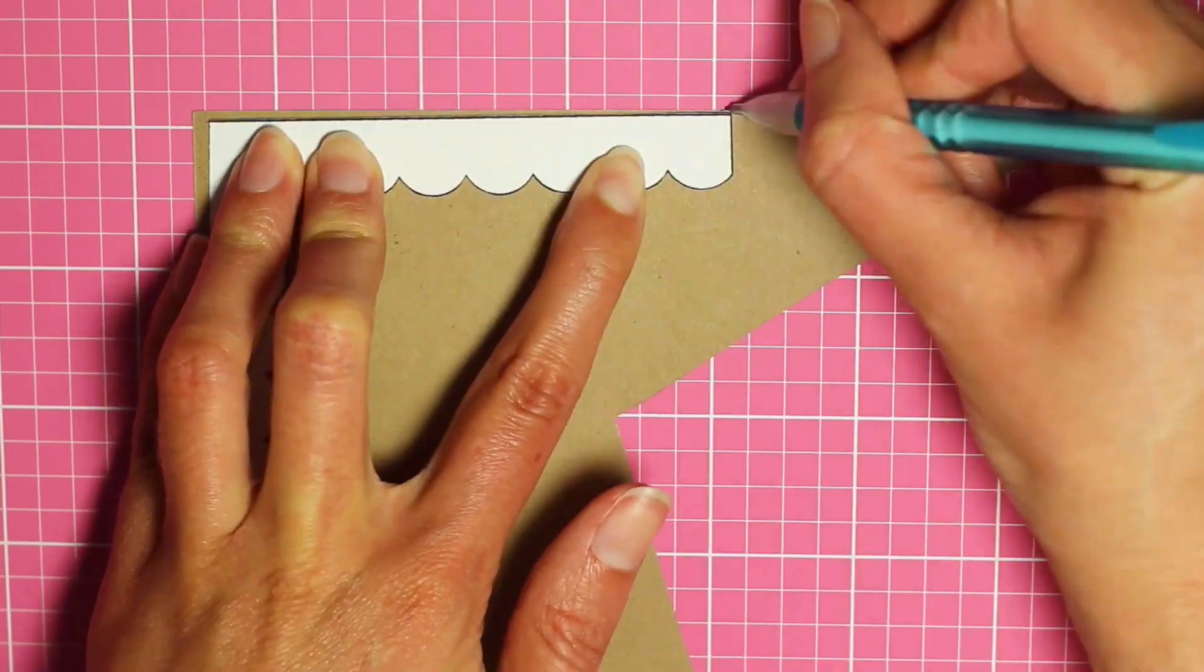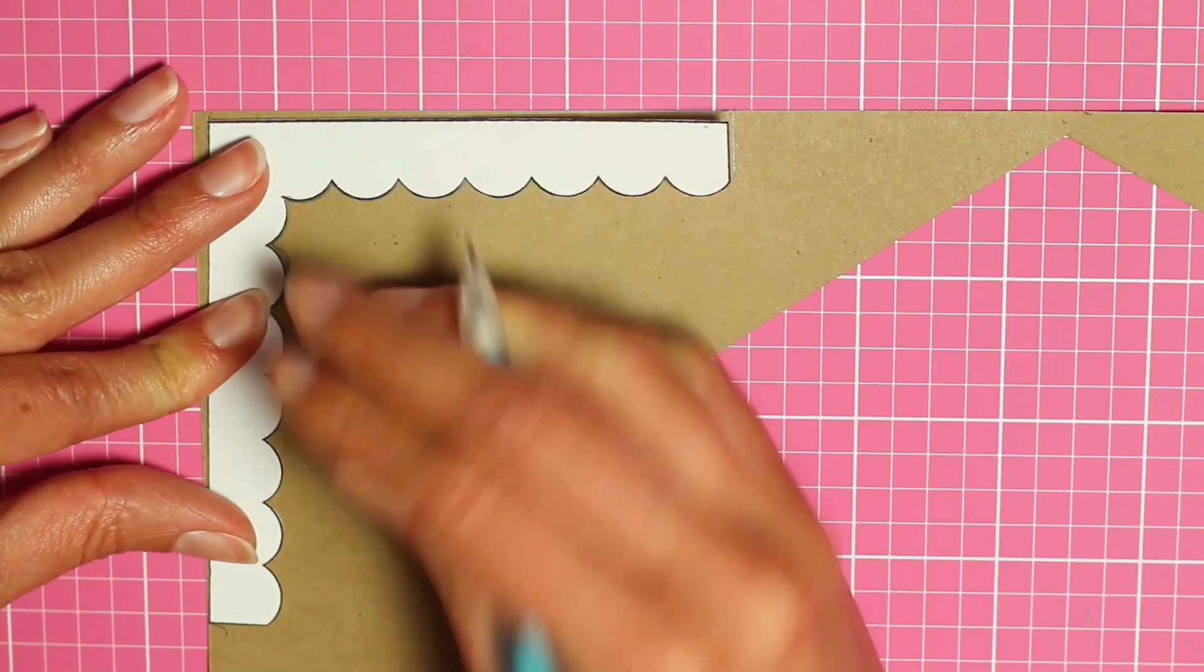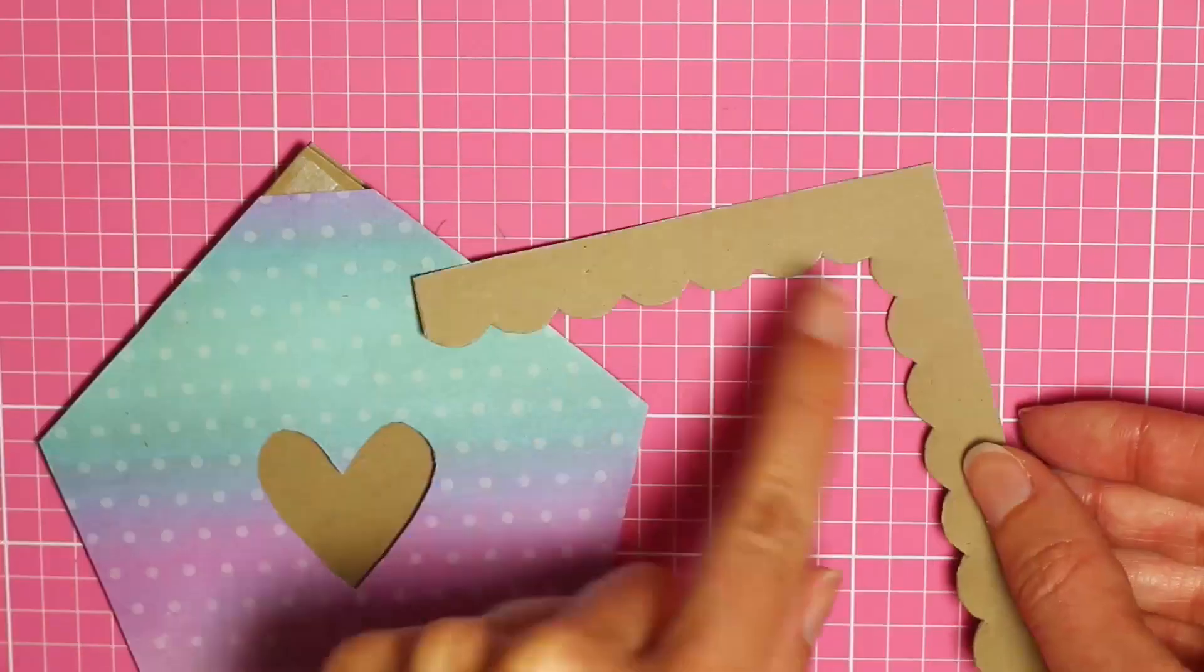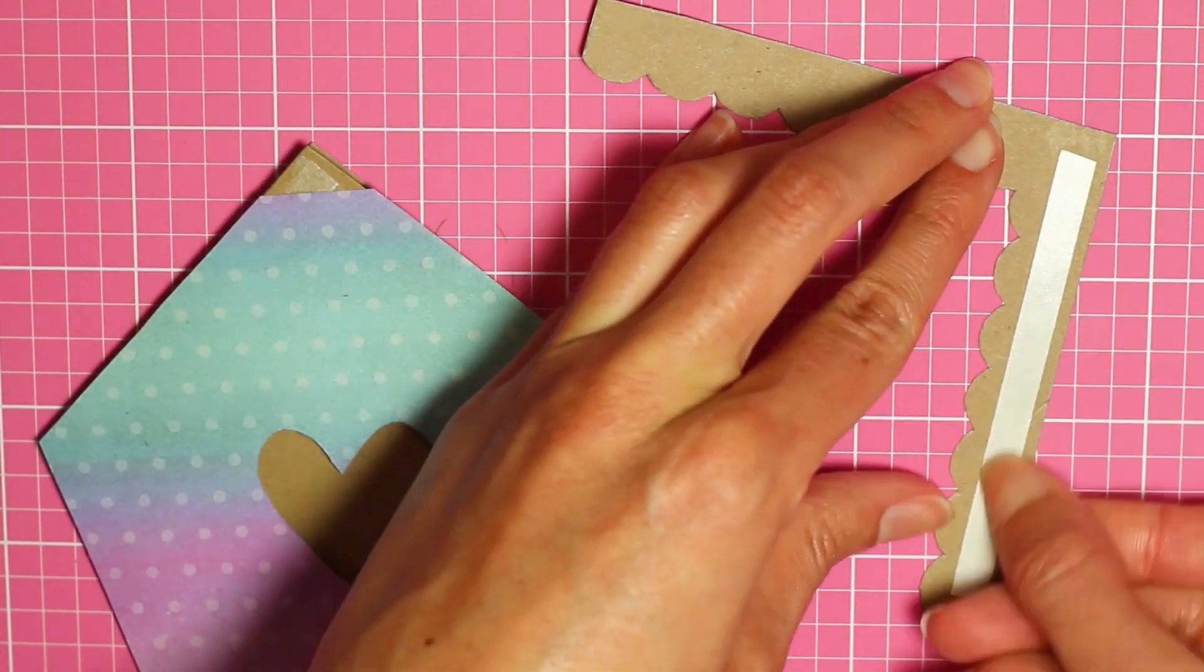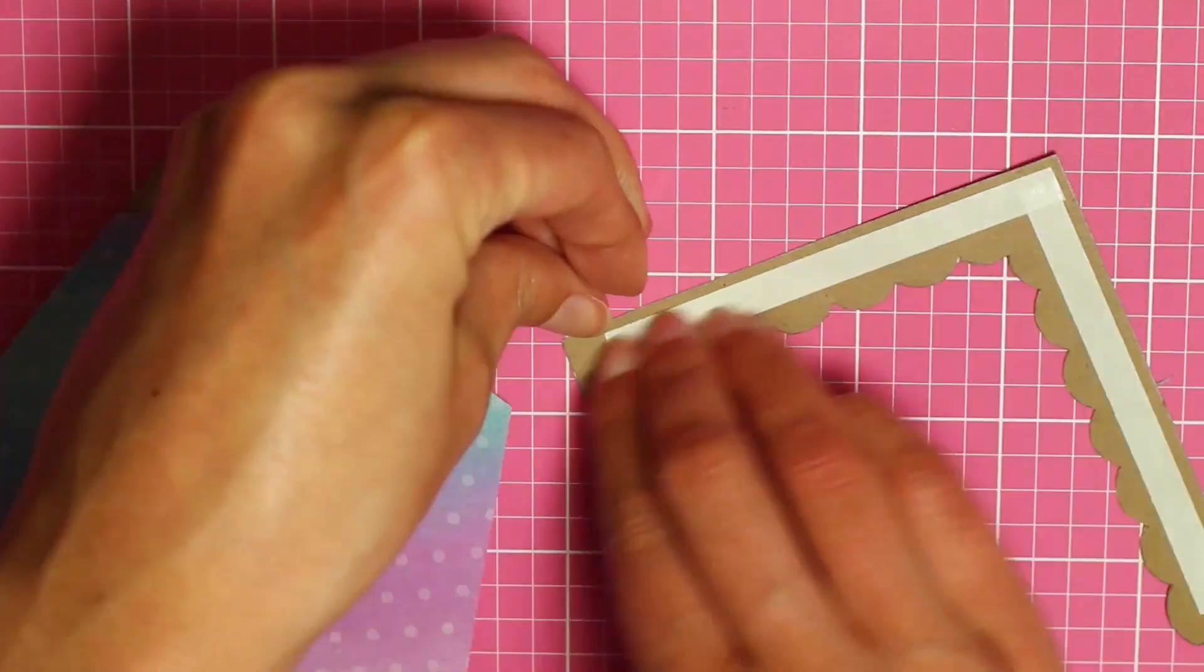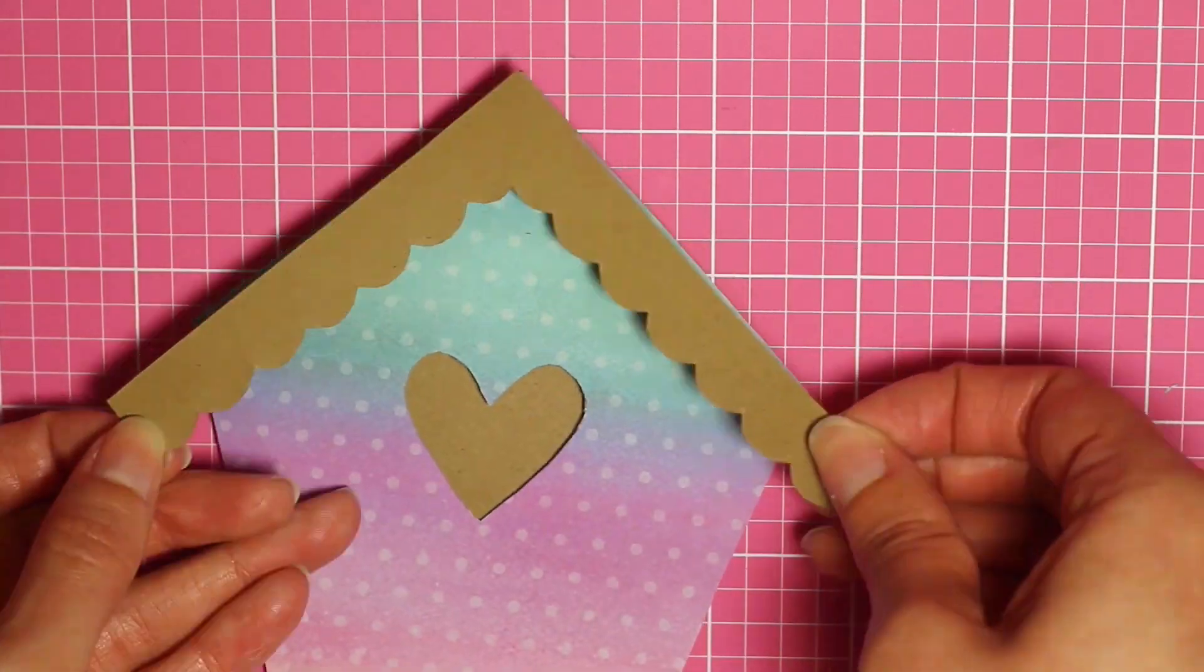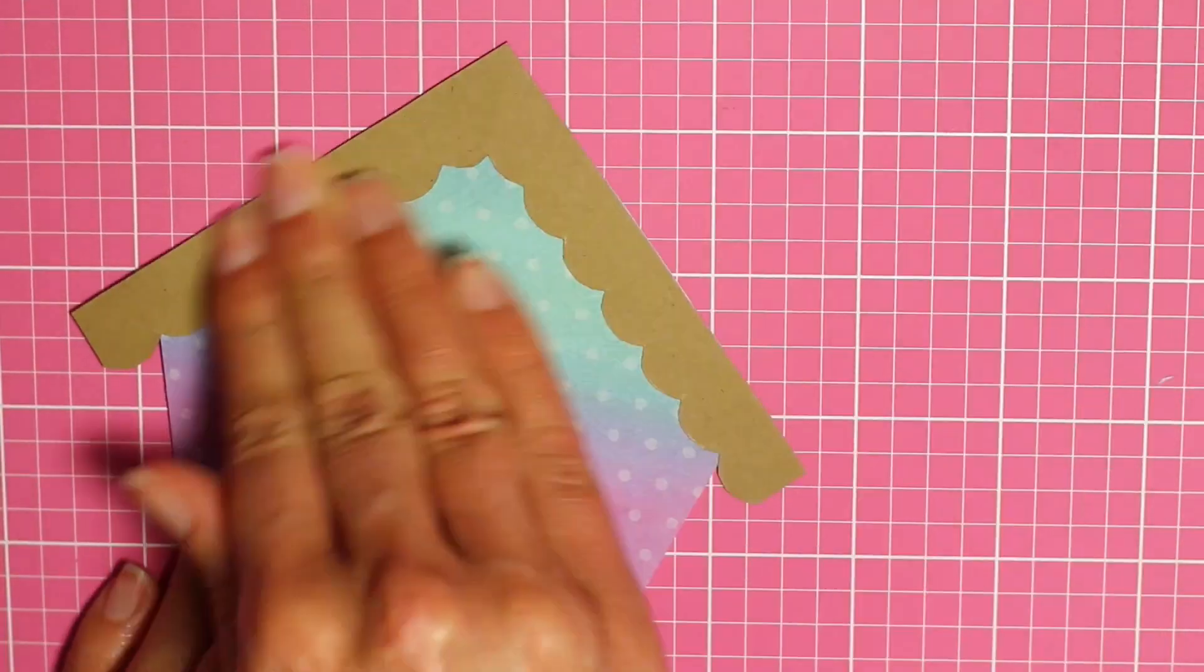Next I'm tracing the roof pattern onto some craft paper. And again I will link all the supplies I can find in the description. And I'm just using that easy tear tape once again to attach the roof to the front of the house. Just press it in place.